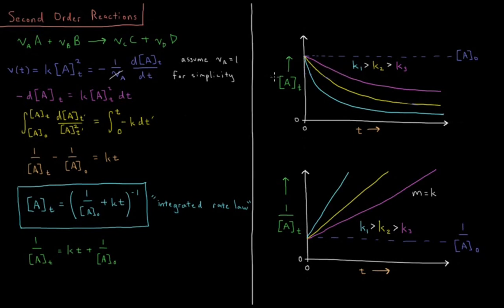But for second order reactions, the rate depends on the concentration squared. So it starts initially going down quickly, but then the rate at which it goes down gets slower and slower, and as the concentration goes down, that decay gets much slower as time goes.